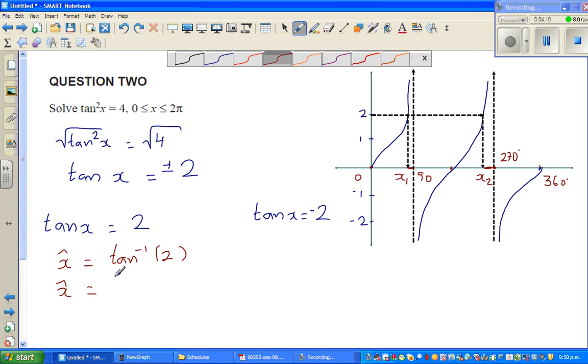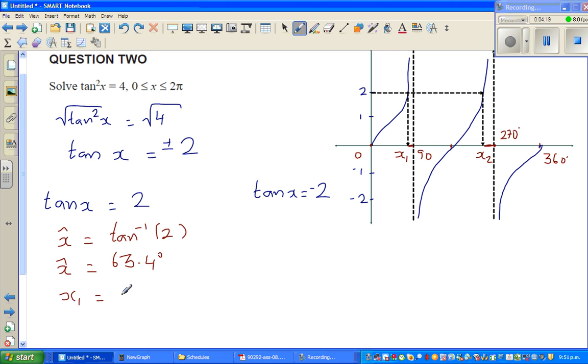So you have 63.4 degrees. Now this is in the first quadrant, so principal angle and x1 are the same. So I can say x1 is 63.4 degrees.